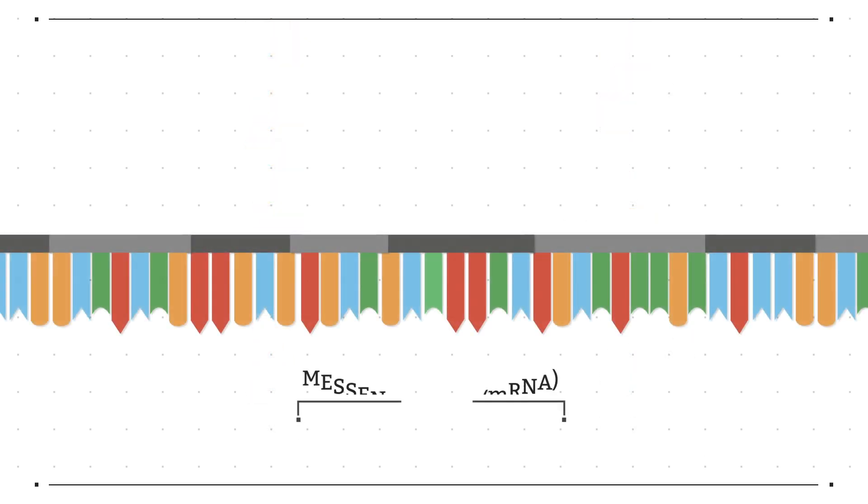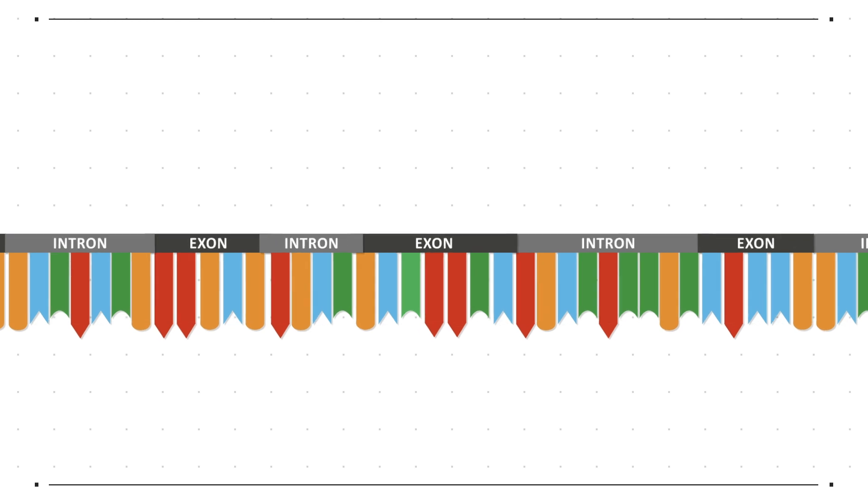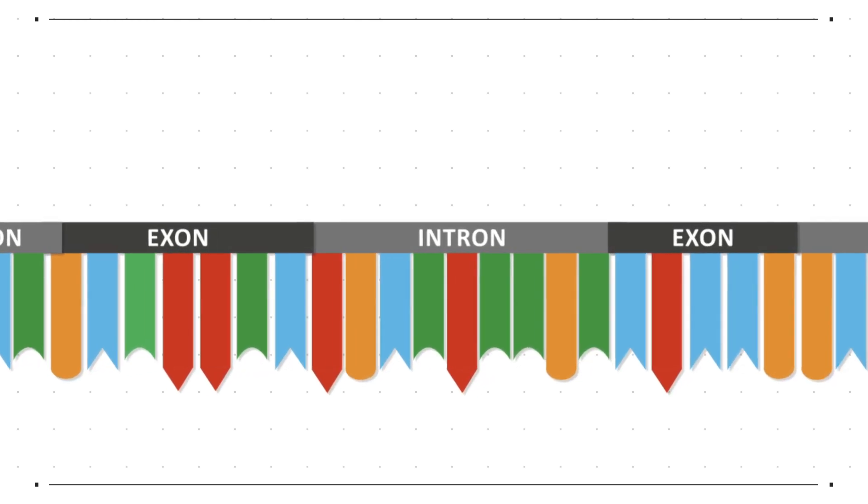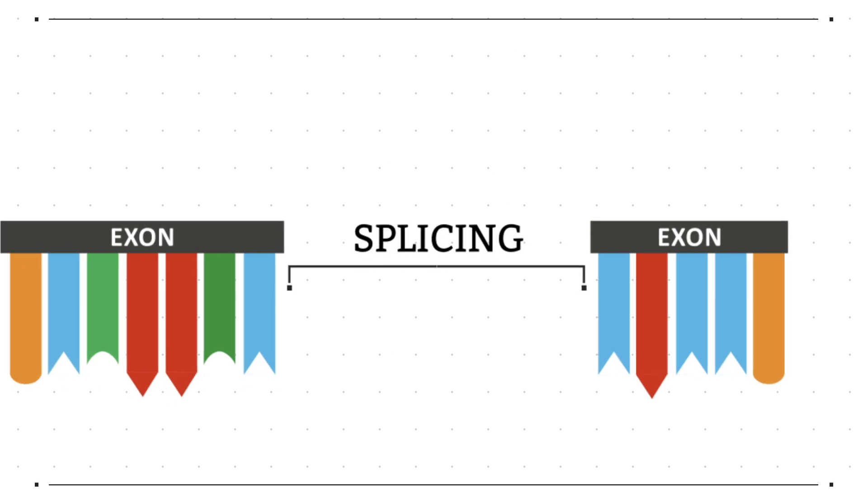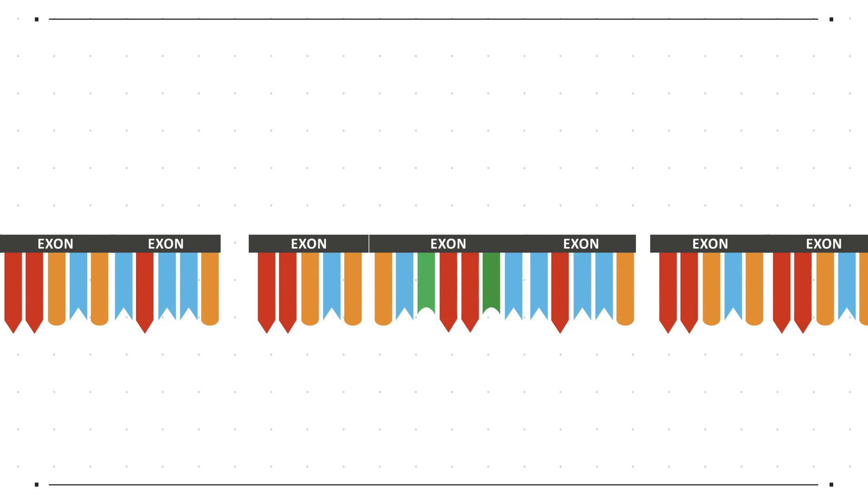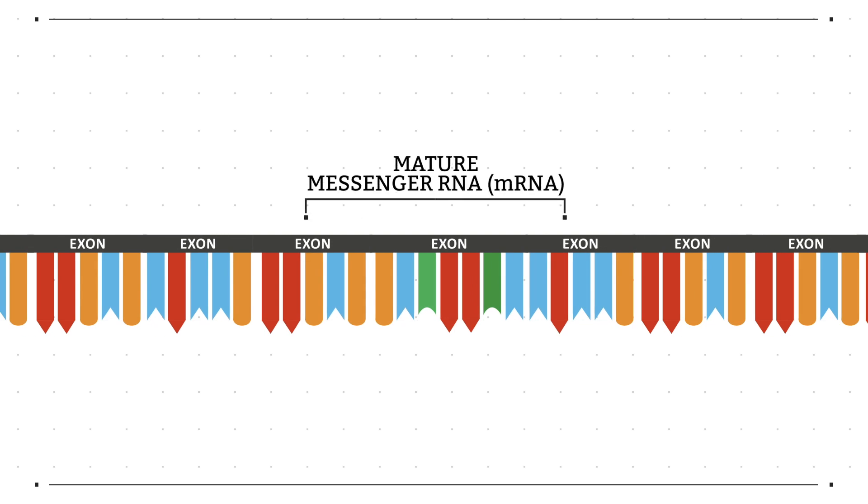The messenger RNA is a transcript of the entire gene and includes the exons which code for amino acids and introns which have other functions such as regulating gene expression. For this reason introns are then removed from the messenger RNA in a process called splicing. As the introns are removed the gaps are joined back together to form a mature strand of messenger RNA containing only the coding regions.